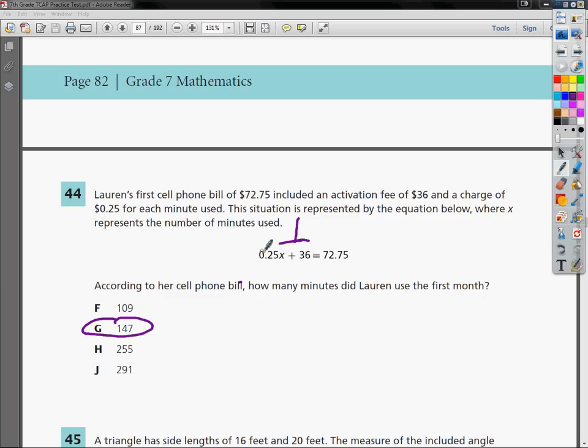This statement says that 0.25 times x plus 36 should equal 72.75. I can use the fact that I'm given answer choices to find a statement that equals 72.75. So all I'm going to do is rewrite the equation and instead of x, I'm going to put a parenthesis and plus 36. All I'm going to do now is plug in my answer choices and see if I can get one that equals the 72.75 or 72 dollars and 75 cents that I'm looking for.